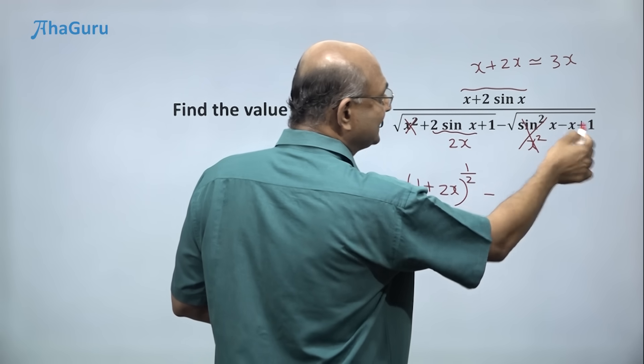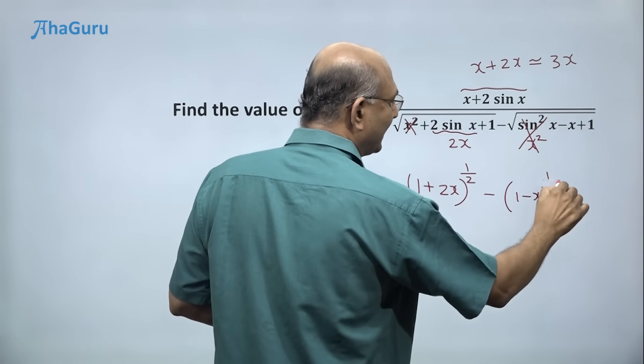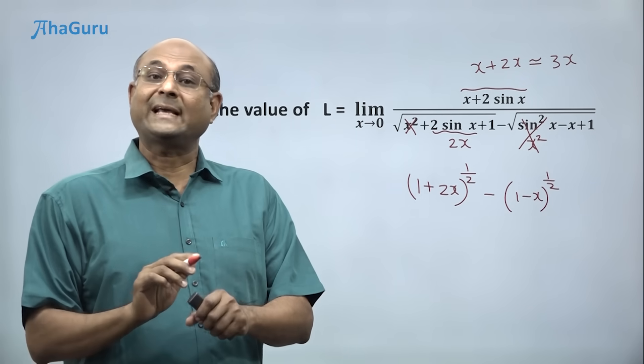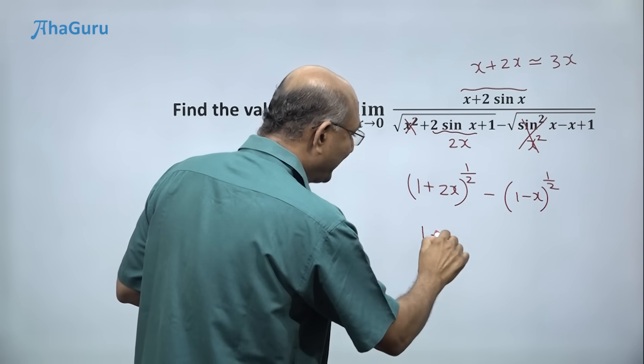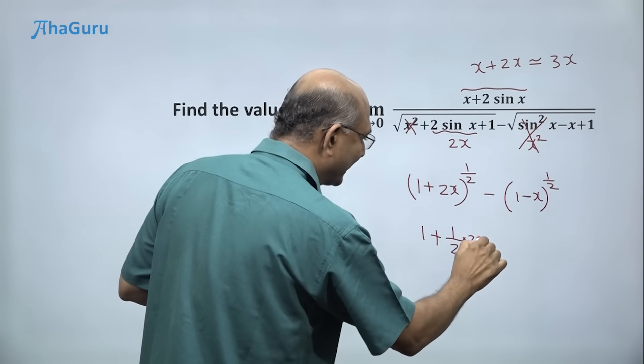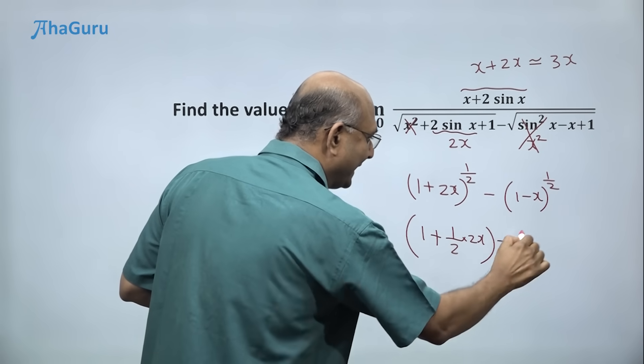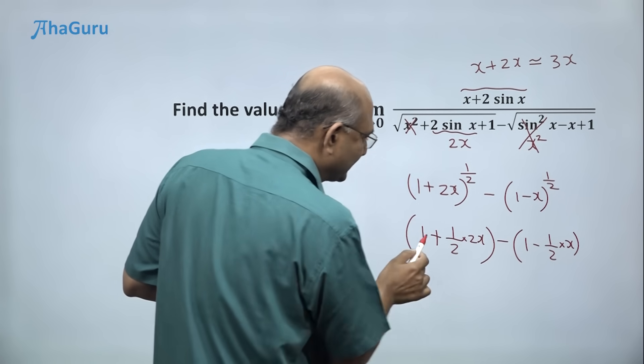So I have 1 minus x under the square root, 1 minus x power half. Now you know the formula 1 plus x power n is 1 plus nx. So what is this? 1 plus half of 2x, half into 2x, 1 plus nx, minus 1 minus half into x.